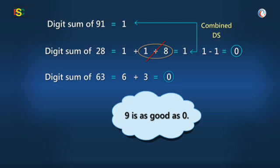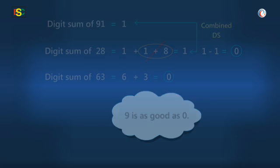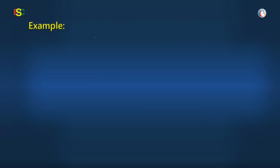Now, moving ahead, let's check this method in the case of multiplication. See, I say 78 into 65 is 5070. So let's cross-check the claim with our checking tool.